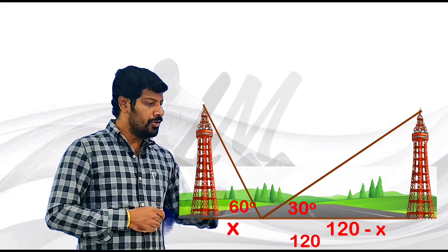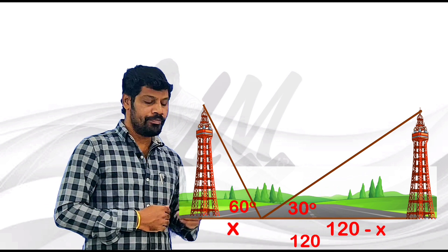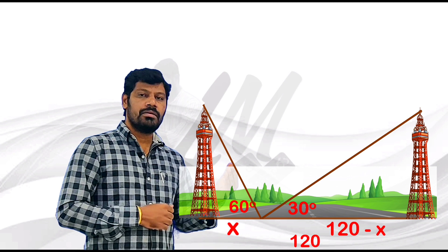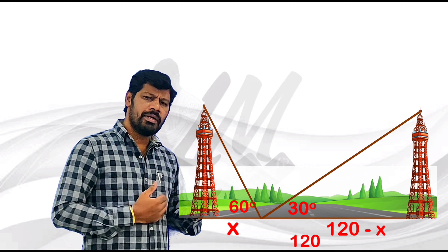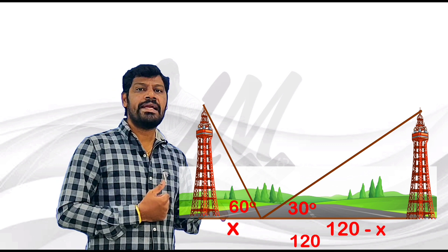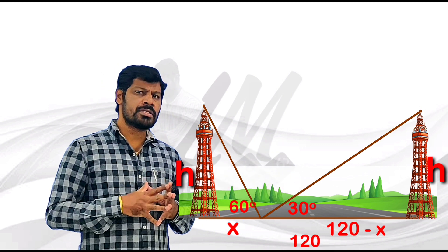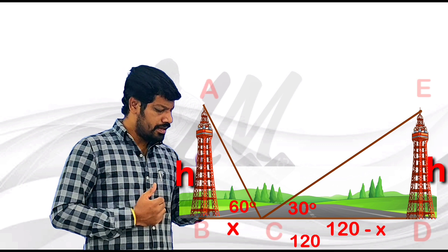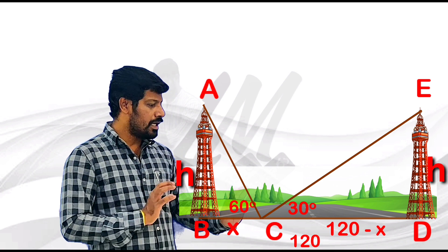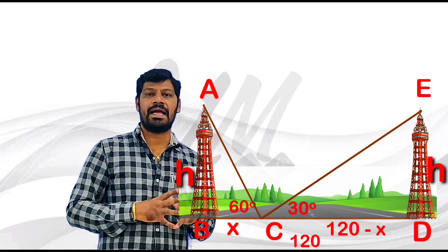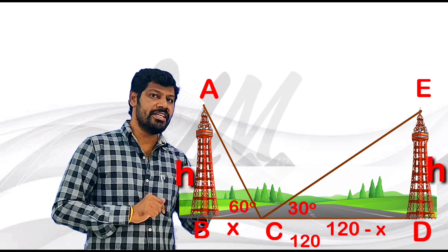Now we go to the solution. If you look at the triangle, the angle is opposite and the angle is adjacent. In triangle ABC, the angle is 60 degrees — the opposite side and the adjacent side are identified.